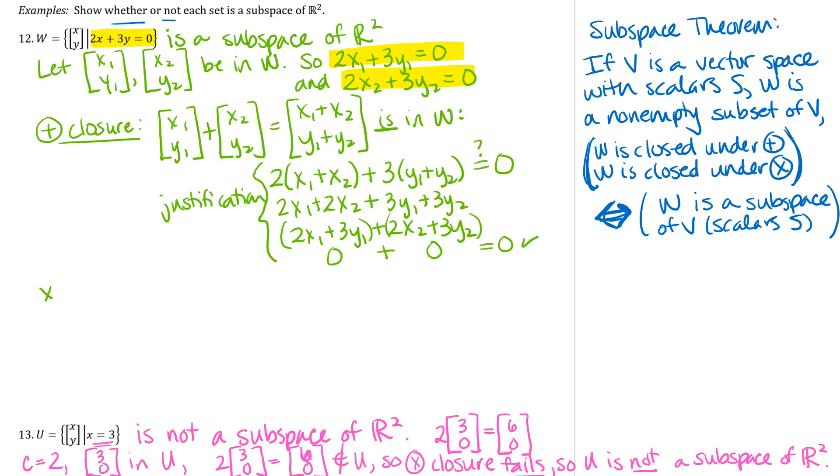And then I need to show also that scalar multiplication closure holds. So I started with some vectors in the set. I really just need one of them and I need some scalar in the set. So I'm going to go back up here to the beginning and just say I'm going to let C be some scalar in my set of scalars.